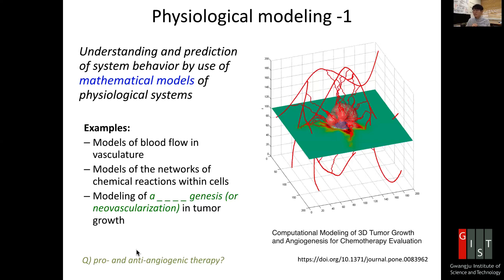Is there any situation where angiogenic growth may be promoted? For example, if someone suffers from ischemic heart disease, we may want new vessel growth to help the organ affected by ischemia, which is a loss of adequate blood supply to the tissue. In that case, we call it pro-angiogenic therapy.